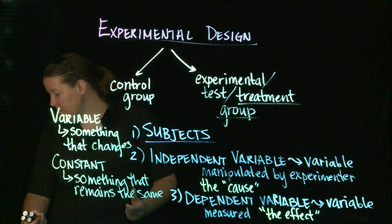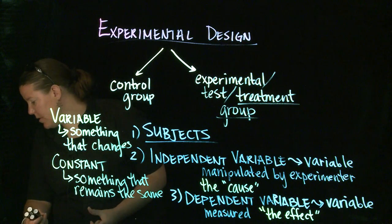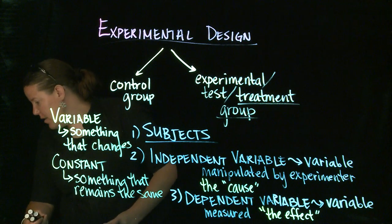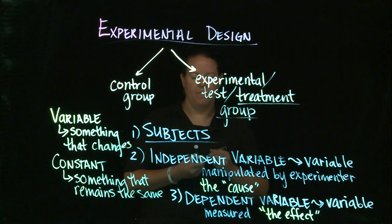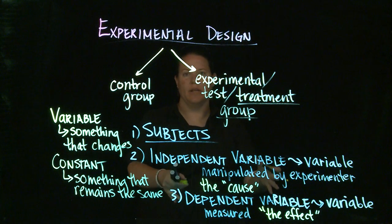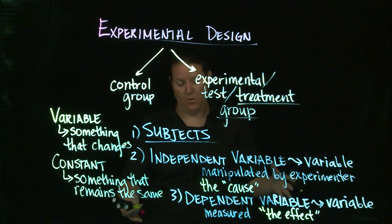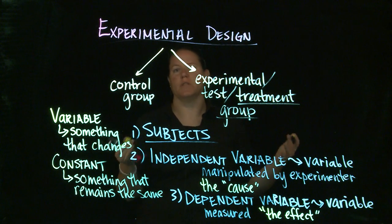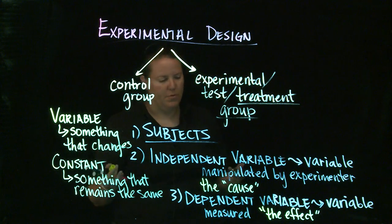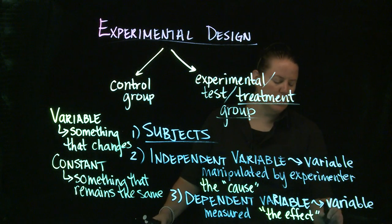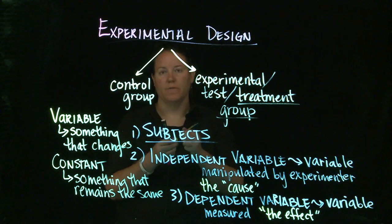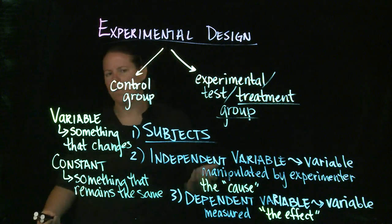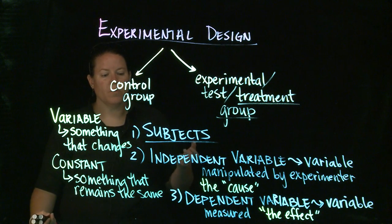Looking at some notes here. What we tend to say about the dependent variable is this is the measured behavior when we're talking about behavioral science or human subjects research. So this is the behavior as an effect of the change that you've caused.